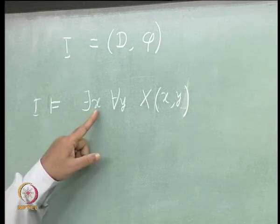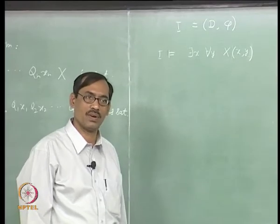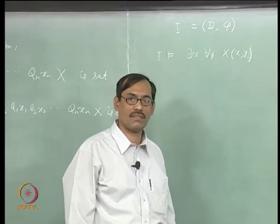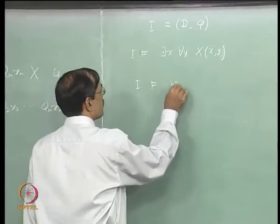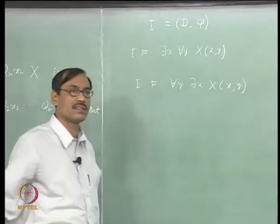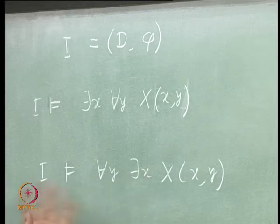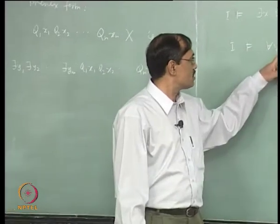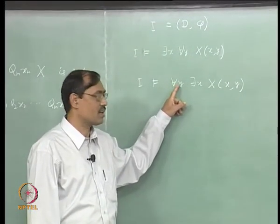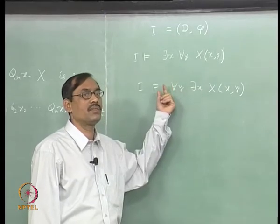That particular element d does not depend upon any other variables. There exists one d such that the other sentence becomes true on its own. But if you consider another sentence, say I satisfies ∀y∃x, φ(x,y), there is a difference. It will say that if you have chosen that d' here, the corresponding d might vary depending on d' in some particular way, so that the formula φ(x,y) or φ(d,d') becomes true. The same d may not work. That is the intuition. If there is a universal quantifier occurring prior to some existential quantifier, then the existential quantifier's variable might depend on the variables used by the universal quantifiers.